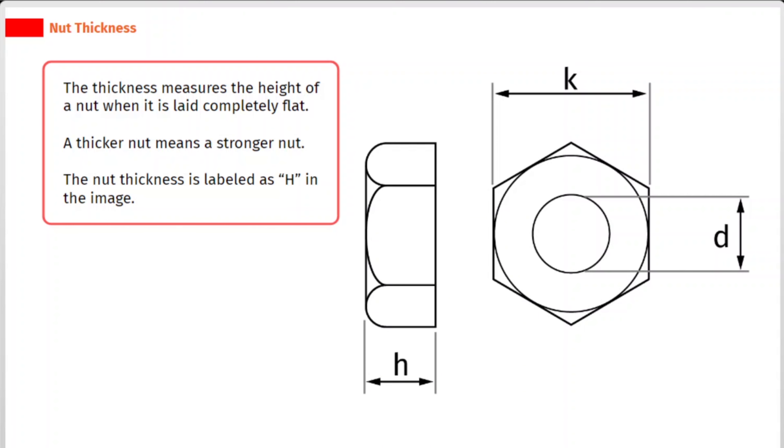The thickness measures the height of a nut when it is laid completely flat. A thicker nut means a stronger nut. The nut thickness is labeled as H in the image.